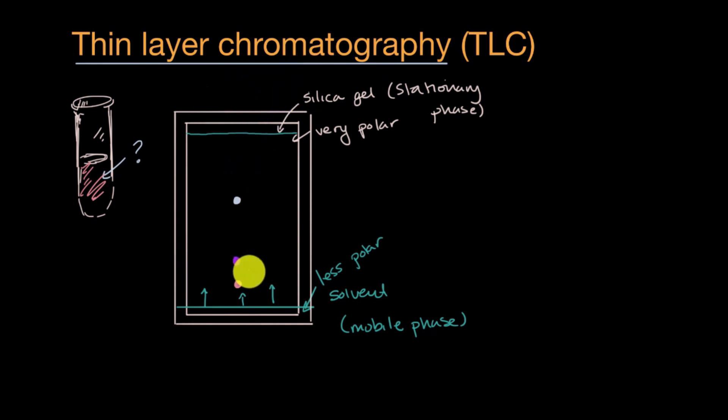But when you run thin layer chromatography, you will see that your original dot will have traveled to various degrees with your solvent and will now be multiple dots, depending on how many things were in your original mixture. This thing right over here, this less polar thing is going to travel further than the more polar thing, more polar constituent substance, because the more polar thing is more attracted to silica gel, which is stationary.